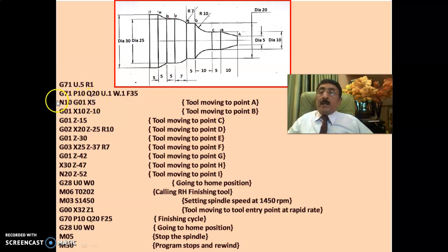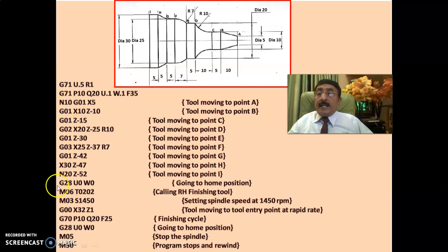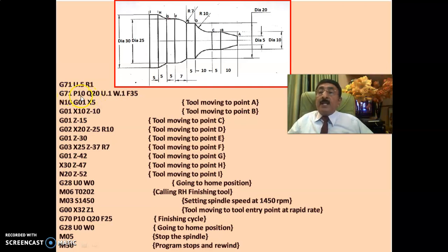A small change in this problem: I have not given a sequence number for every block. G71 P10 Q20 means the rough turning cycle executes the program between sequence numbers N10 and N20. G71 P10 Q20 U0.1 W0.1 F35 — after rough turning, an allowance of 0.1 mm is left on X and 0.1 mm on Z, with a feed of 35 mm per minute.